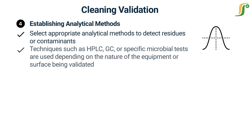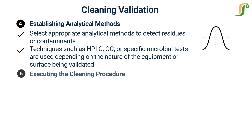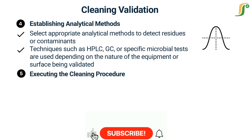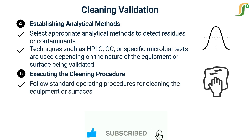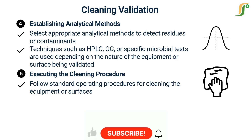Techniques such as HPLC, GC, or specific microbial tests are used depending on the nature of the equipment or surface being validated. Step 5: Executing the cleaning procedure. We follow standard operating procedures for cleaning the equipment or surfaces. It's essential that our cleaning process is representative of routine practices in the manufacturing facility.